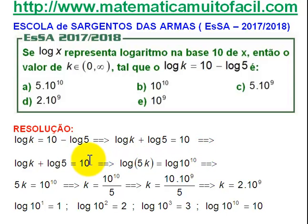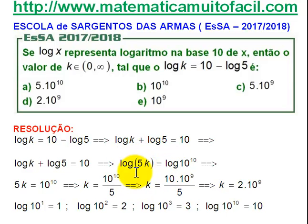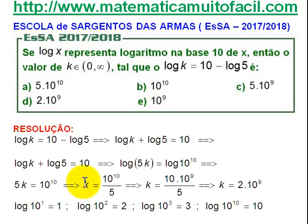Agora ficou bonito. Eu tenho log e log. Quando eu tenho uma igualdade de logaritmos onde as bases são iguais, é porque os logaritmandos são iguais. Então, 5K é igual a 10 elevado à décima. E daí, o que eu estou querendo é o valor de K: K é igual a 10 à décima sobre 5.